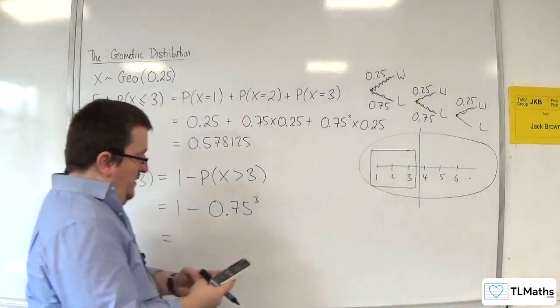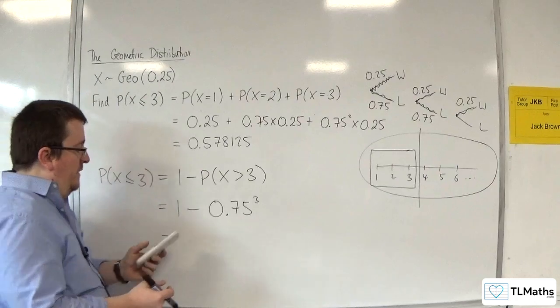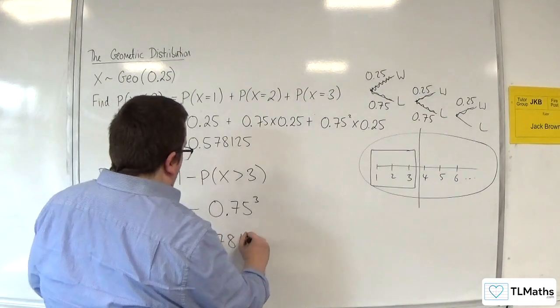So, 1 take away 0.75 cubed is 37 over 64, 0.578125.